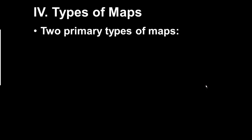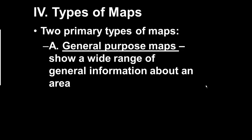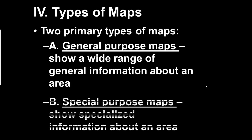There are basically two different types of maps. The first type is called the general purpose map. Those are the types of maps that we use every day. They show a wide variety or range of general information about an area. Those are the maps that we use 95% of the time when we're looking at a map either physically, on a piece of paper or on our cell phones or GPS or on the computer. The second type of map is called a special purpose map. These are maps that show specialized information about an area, normally things like population or economic information about an area.